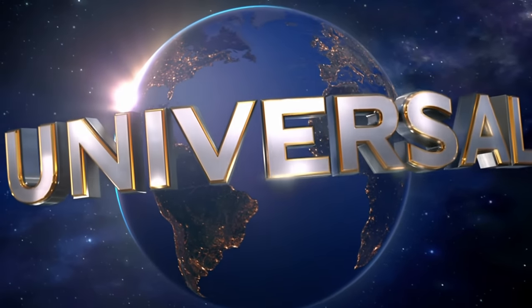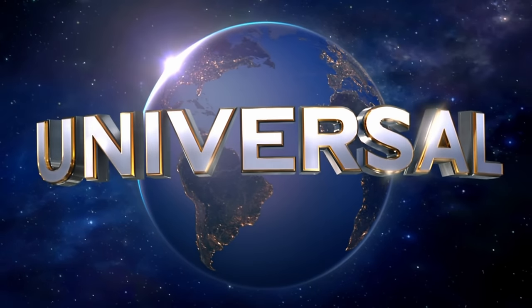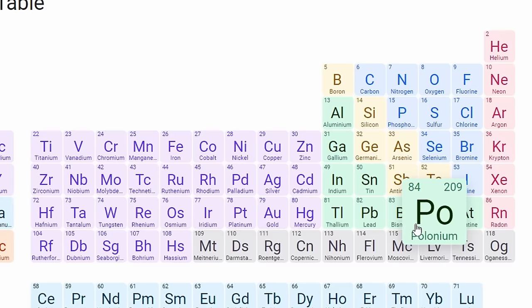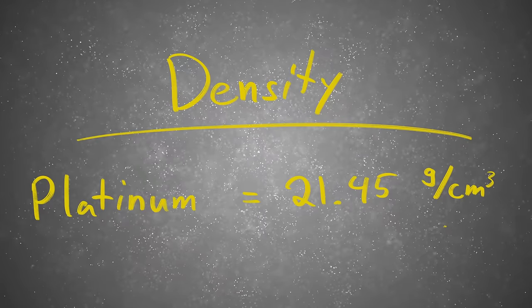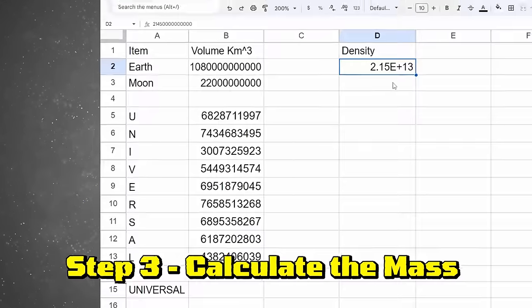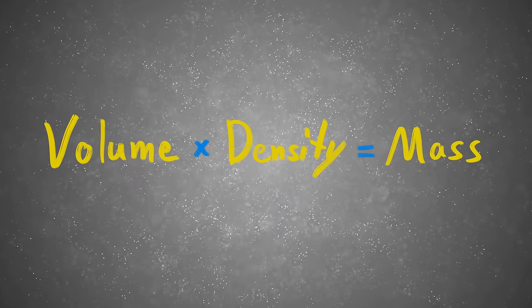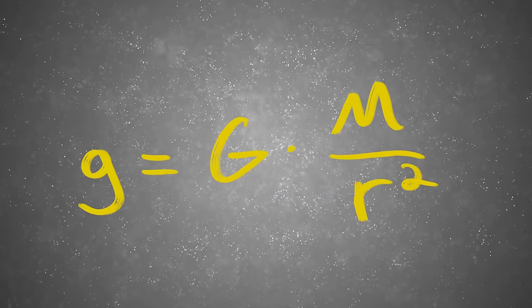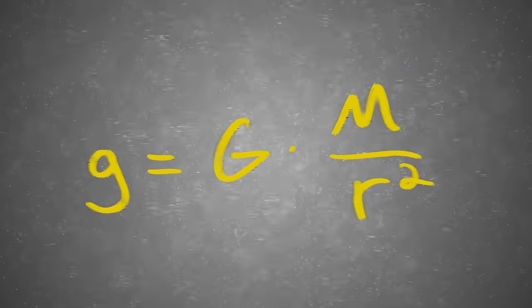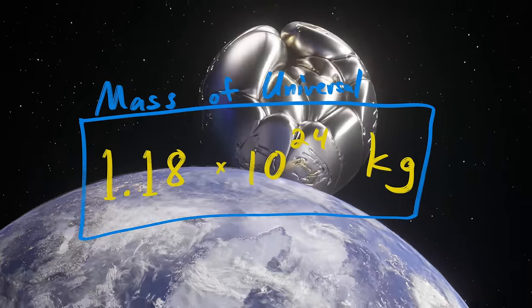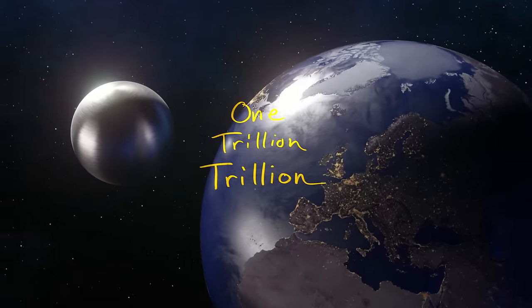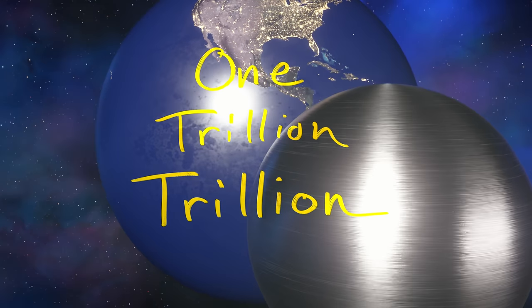The whole thing could be platinum with a little bit of gold lining, or it could all be silver, which is a lot lighter. Actually, the density of platinum and gold are almost the same. I now have the density of platinum, and I have all of the volumes. I can multiply those two numbers together to get the mass, and that will allow me to figure out how much gravity these letters have. The Universal letters, if you were to melt them all down into one platinum moon, it would weigh one trillion trillion kilograms. That's insane.